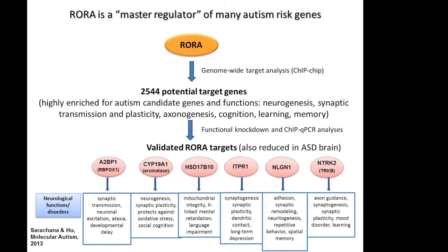Very importantly, we also found that RORA is a master regulator of many autism genes. RORA is a nuclear hormone receptor which acts as a transcriptional modulator. We wanted to know what genes are actually regulated by RORA, so we did a genome-wide target analysis using chip-on-chip methodology. What we found was that there were over 2,500 potential target genes of RORA. These genes were highly enriched for autism candidate genes with functions such as neurogenesis, synaptic transmission and plasticity, axonogenesis, cognition, learning, and memory. We then did a validation of half a dozen of these target genes using functional knockdown methodologies as well as chip QPCR analyses, and we validated all of the selected genes as transcriptional targets of RORA.